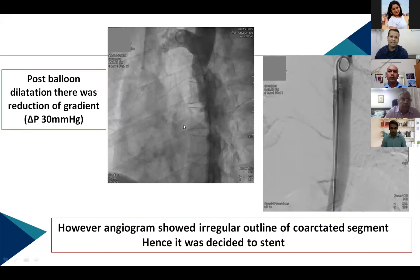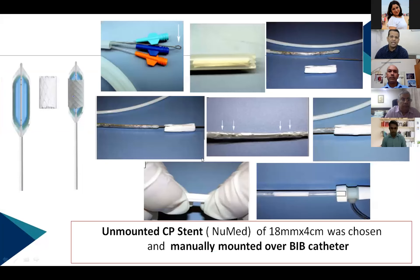After initial balloon dilatation the gradient decreased from 80 to 30 mmHg, but there was still irregularity at the coarctation site and the gradient remained significant. A 14×4 Tyshak II balloon — a non-compliant balloon allowing uniform dilatation — was used. Post-dilatation showed some residual irregularity but the gradient fell to 30 mmHg. In adult patients, stenting is generally pursued. A covered CP stent was chosen, deployed using a balloon-in-balloon catheter system.